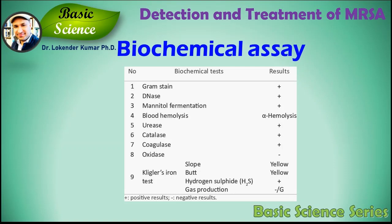Staphylococcus aureus produces yellow colonies with yellow zones, whereas coagulase-negative staphylococci produce small pink or red colonies with no change in the color of the medium. Further, using biochemical assays, the bacterial genus and species is confirmed. Staphylococcus aureus is DNase-positive, mannitol-positive, and causes alpha-hemolysis; it is coagulase-positive. The rest of the biochemical assay results can be seen on screen. In future presentations I will explain the science behind these tests, so please stay tuned and subscribe to the YouTube channel.